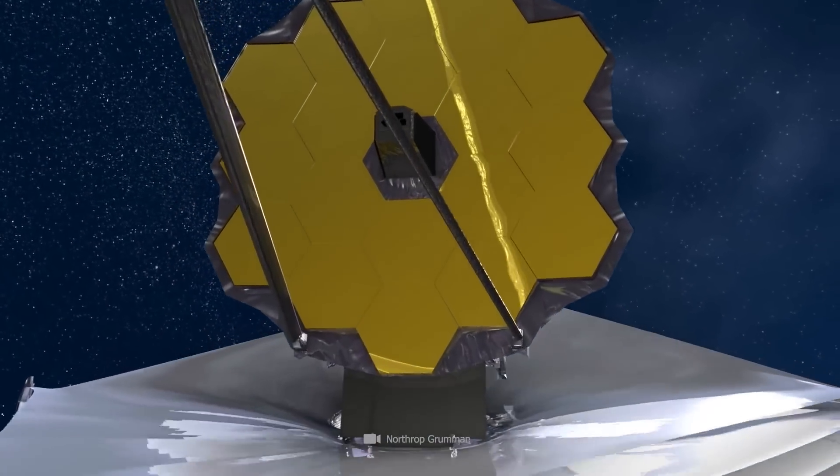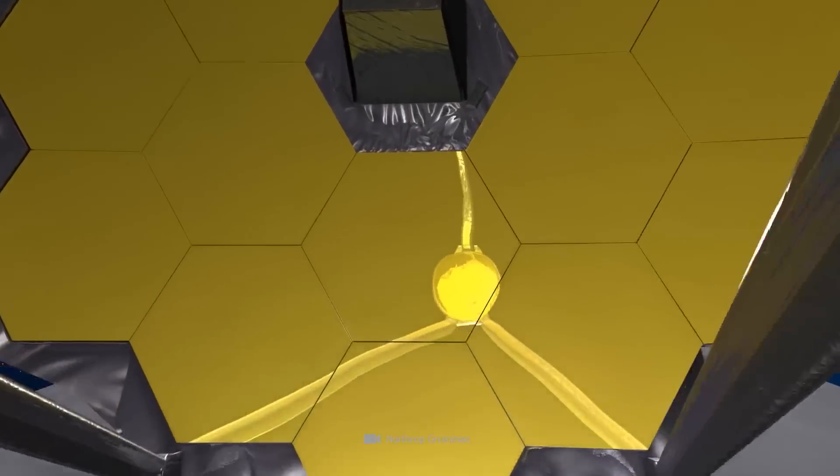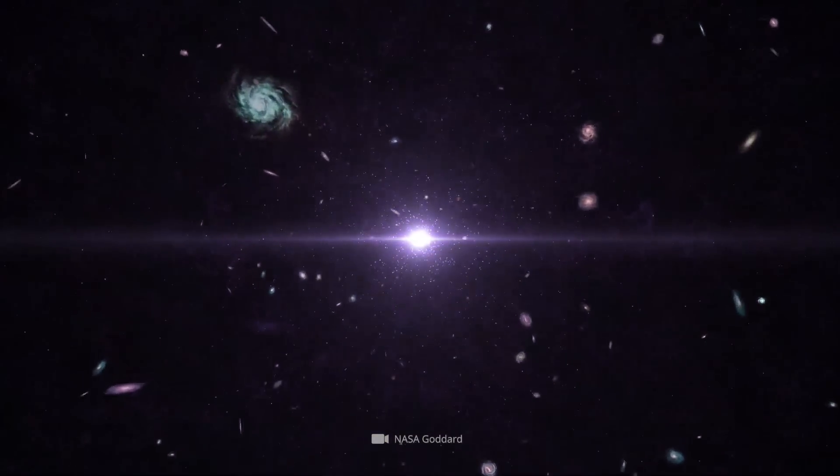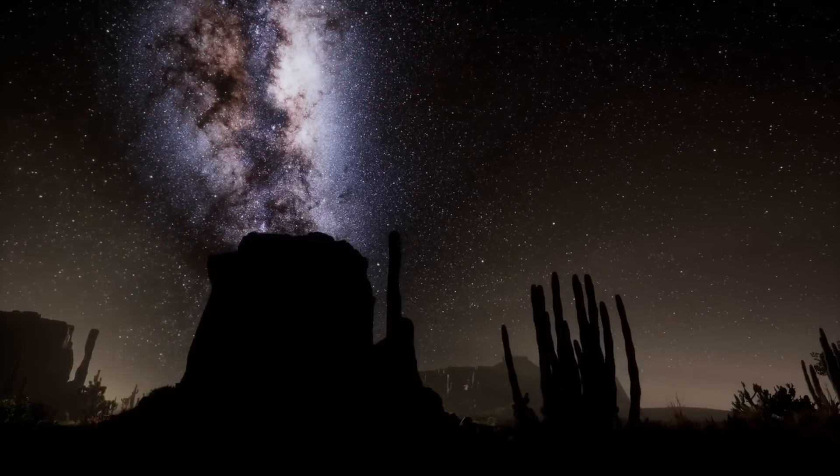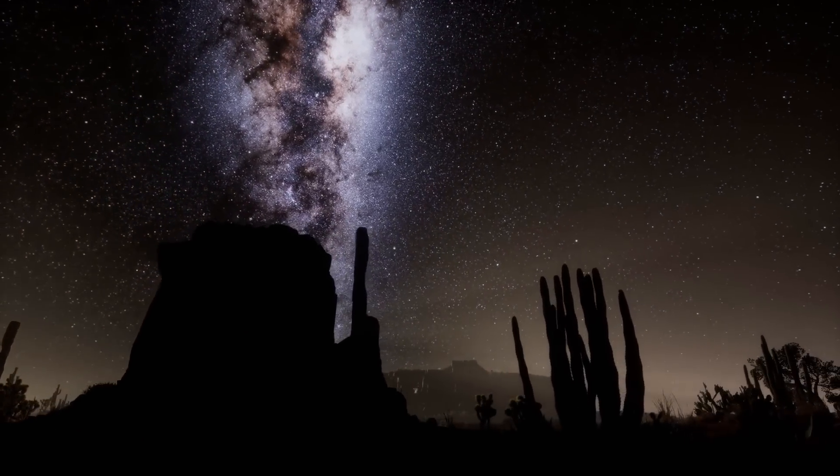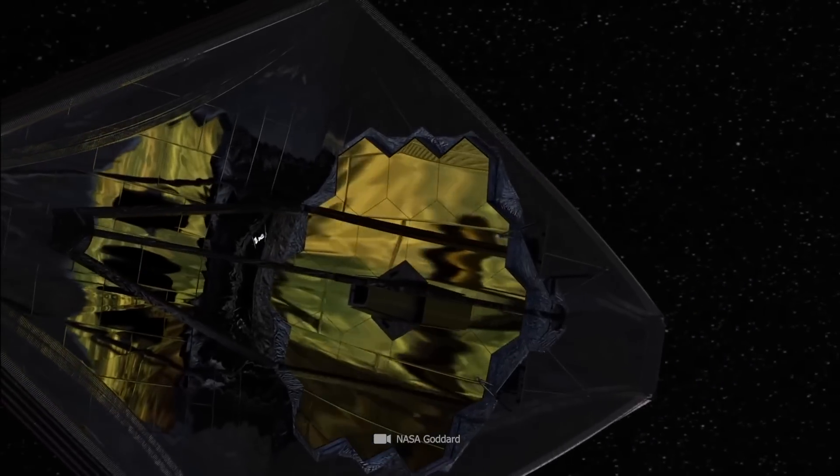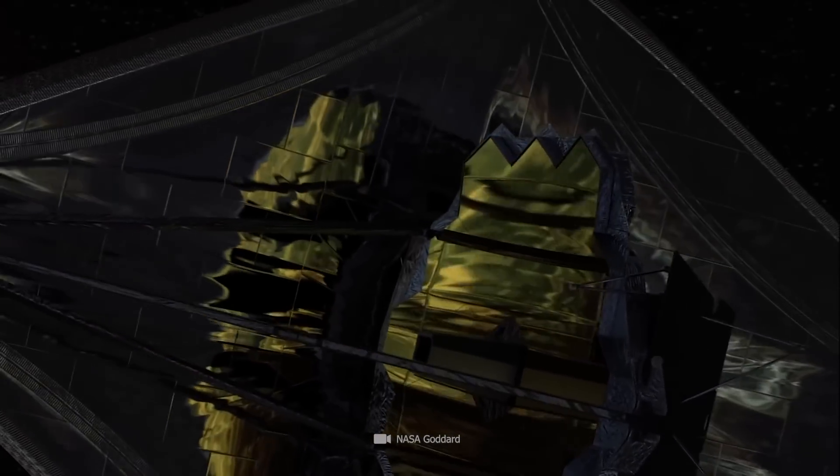But if James Webb is to be believed, there were ready-made, highly organized and starry galaxies already 300 million years after the Big Bang. Despite the assumptions, astronomers could never be sure what the early universe really looked like.